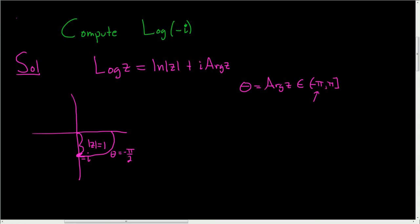And so now we can go ahead and write the answer down. So the log of negative i is equal to the natural log of the modulus of z. We said that was 1 plus i times the argument of z.